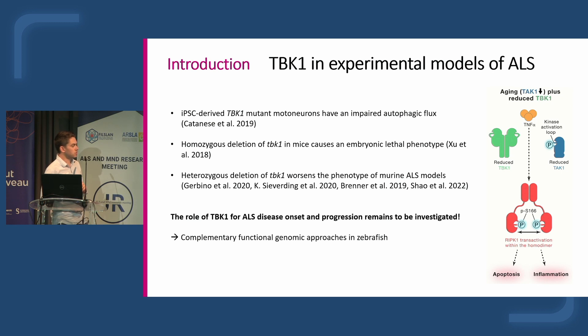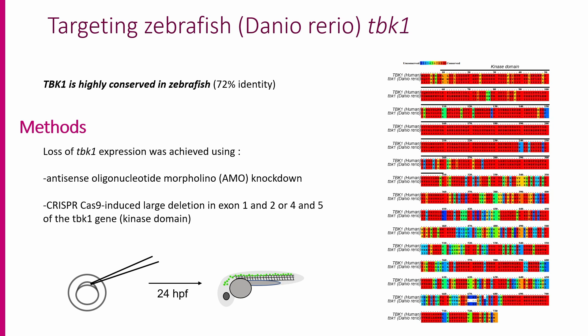The role of TBK1 in ALS disease onset and progression remains to be investigated. There's an interesting suggestion that its impact on apoptosis and inflammation could be mediated through the kinase RibK1, which I'll discuss later. Our approach was to generate complementary functional genomic models by deletion of TBK1 genes in zebrafish. We first confirmed that TBK1 biology is conserved in zebrafish — the amino acid sequence is very well conserved, especially the kinase domain, with more than 90% identity. We generated models with loss of TBK1 expression using antisense oligonucleotide morpholinos injected in embryos at the one-cell stage.